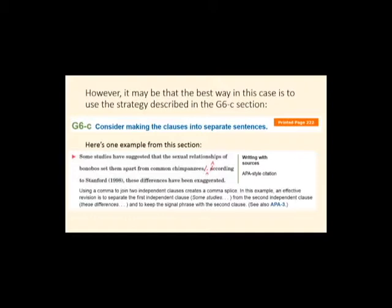So your teacher may have written G6C, and the teacher may be trying to say that in that particular case, the best way to fix a sentence is that revision strategy: consider making the clauses into separate sentences. So you can look at an example sentence like the one below and read about why a period would be the best way to fix it. As it explains here, it's more effective to use a period than any other way because the second independent clause has a signal phrase, 'according to Stanford,' and that would be awkward to use a comma and a coordinating conjunction in that case, probably.